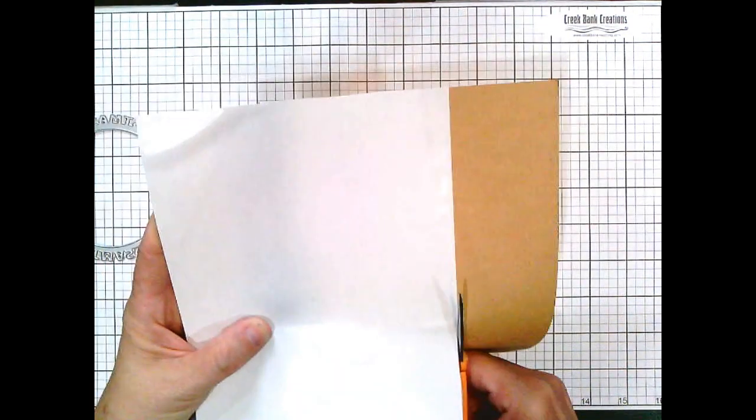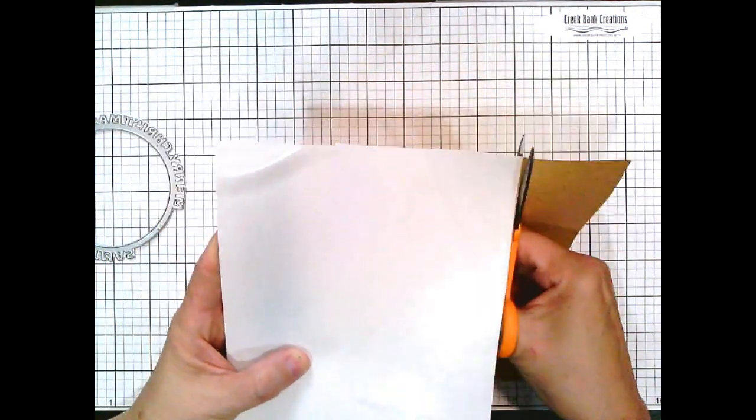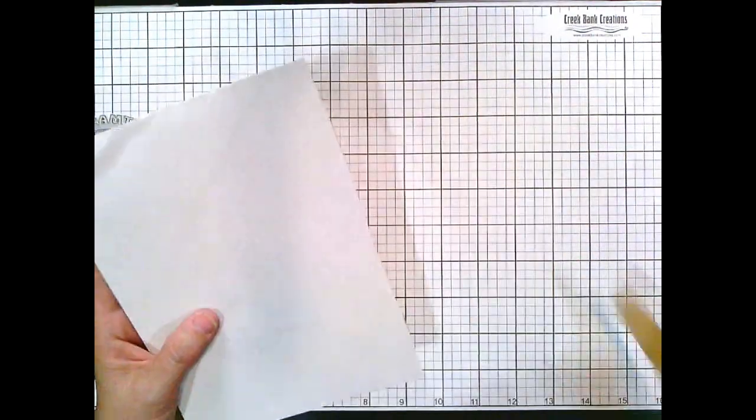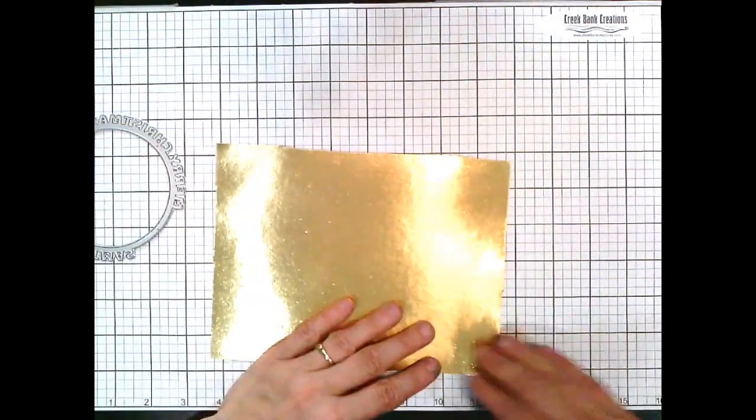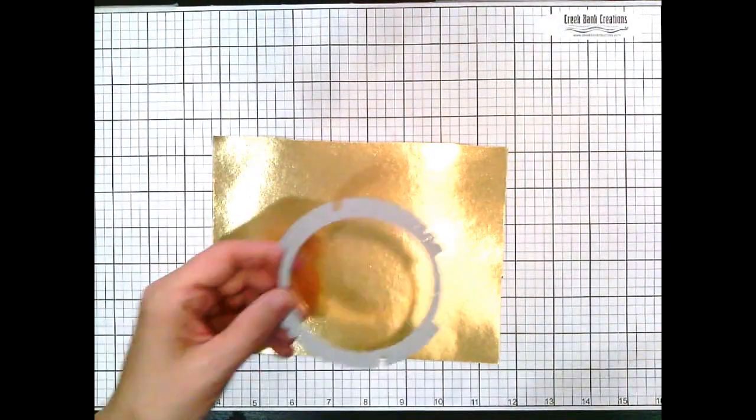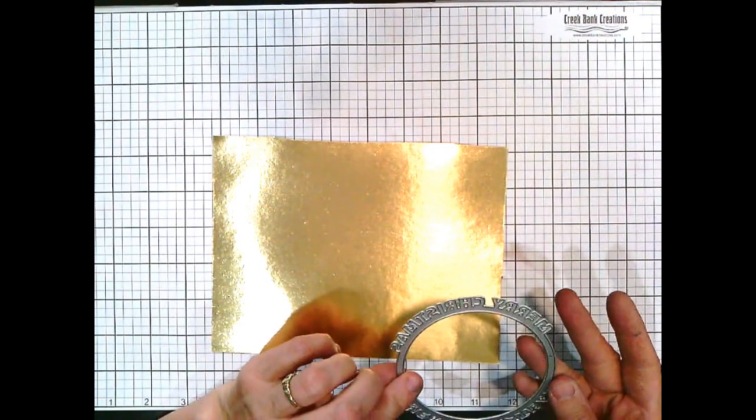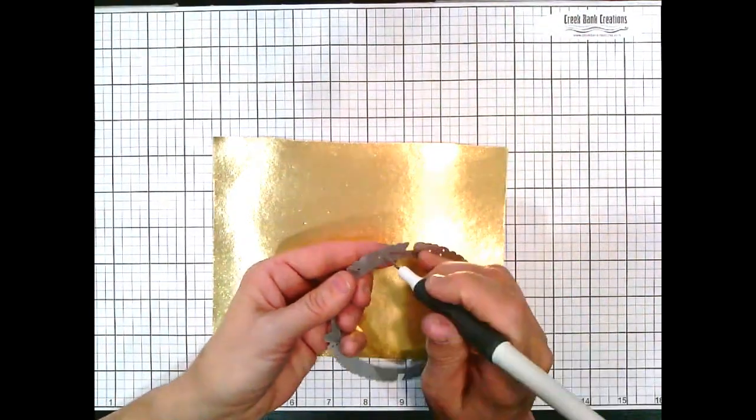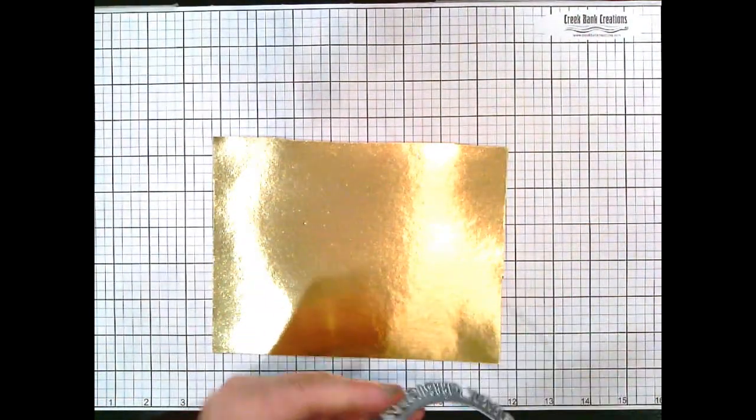And then we're going to trim that out. We don't want any extra adhesive edges hanging off of our paper. Whenever I do this, I always do a full sheet of paper, and then I store it all in an envelope storage pocket right behind my desk so that I have it whenever I want to use it. So I'm going to put my die on there.